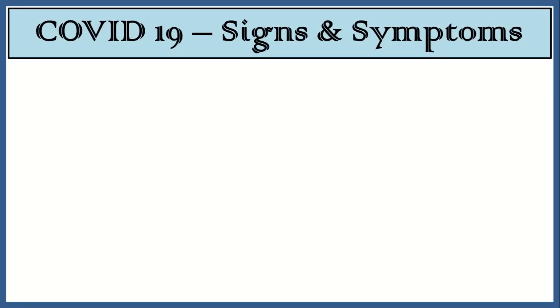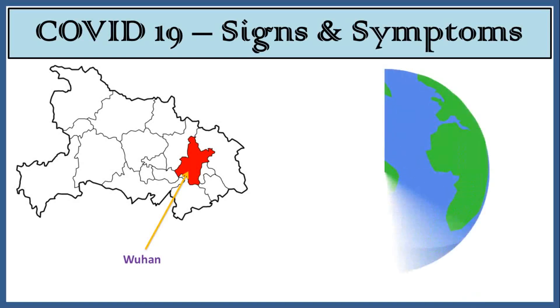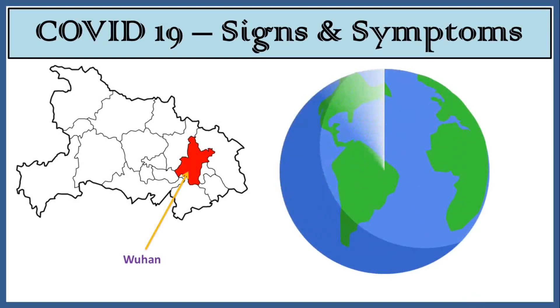COVID-19, or the 2019 novel coronavirus outbreak, emerged in the city of Wuhan in China in late 2019, and has become a global health problem infecting thousands of people in almost all countries around the world. The virus initially causes problems in the upper respiratory tract and can rapidly progress into acute pneumonia and sepsis, which are the most common complications of the infection.